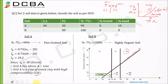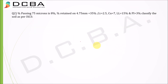For Soil B, since 100% is less than 75 microns and there is no plasticity index or liquid limit given, it is a highly organic soil.